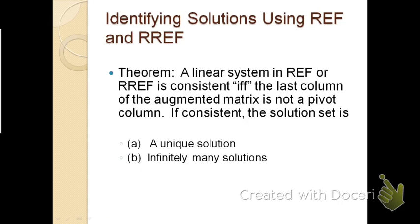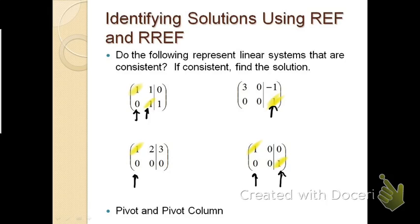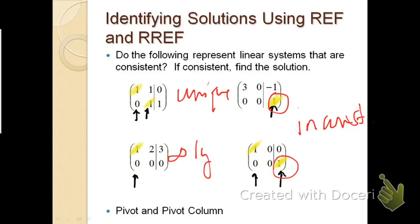We have a theorem stating that a linear system in REF or RREF is consistent if and only if the last column of the augmented matrix is not a pivot column. If it is consistent, the solution is either unique or has infinitely many solutions. The two inconsistent systems we saw had the last column as a pivot column, confirming the theorem. The consistent systems had either a unique solution or infinitely many solutions.